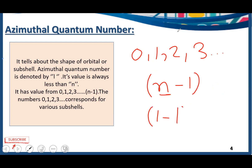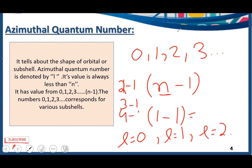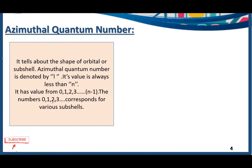If n equals 1, l equals 0; if n equals 2, l equals 1; if n equals 3, l equals 2; if n equals 4, l equals 3. So l equals 0 for the s subshell, l equals 1 for the p subshell, l equals 2 for the d subshell, and l equals 3 for the f subshell. The numbers 0, 1, 2, 3 correspond to various subshells.